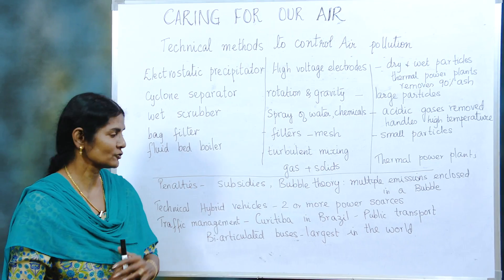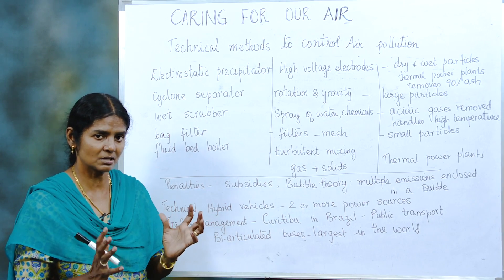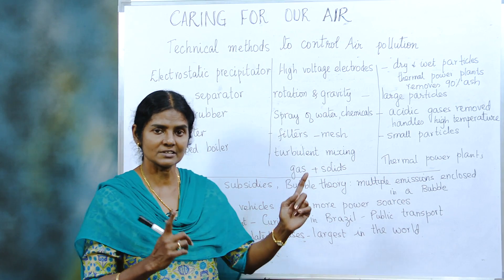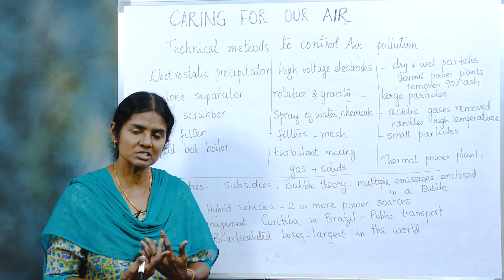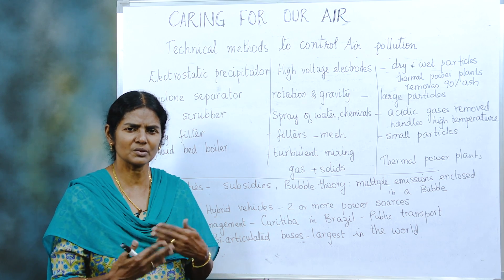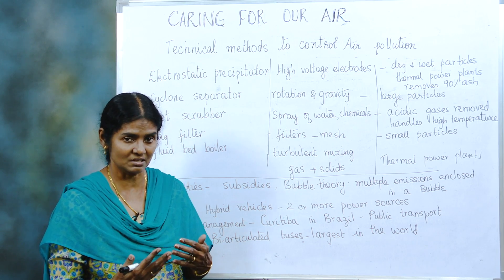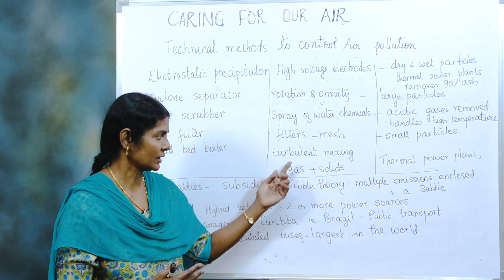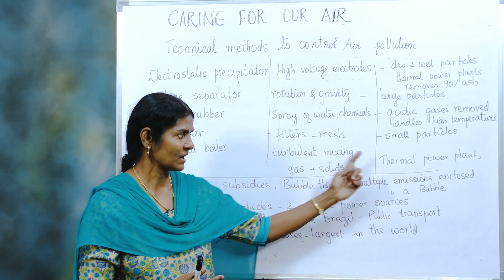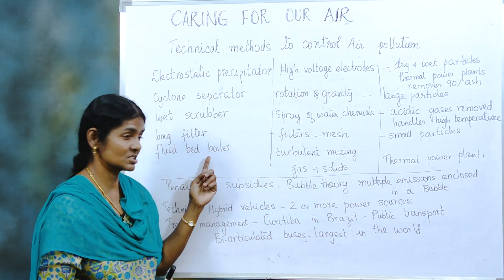Next we have fluid bed boilers. This is combustible and usually has turbulent mixing — turbulence means very violent mixing. Gases and solids are mixed together; this happens in thermal power plants and its efficiency is very high.